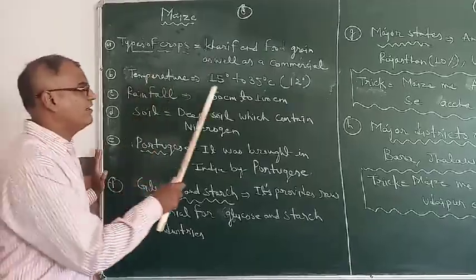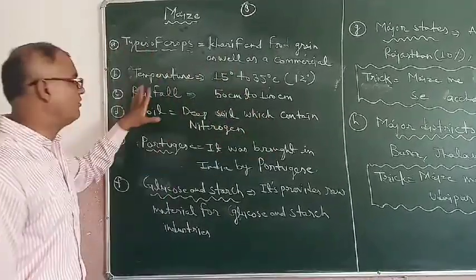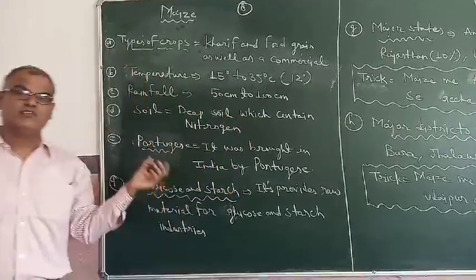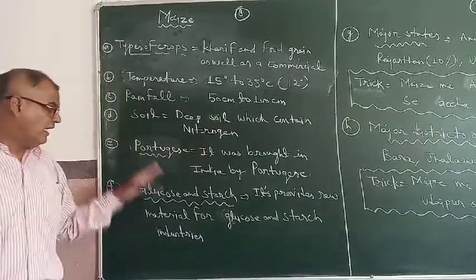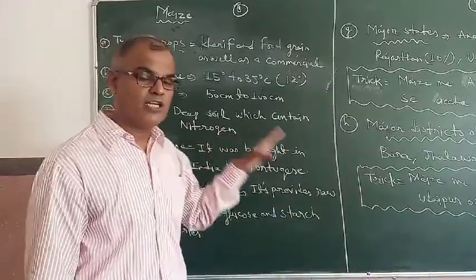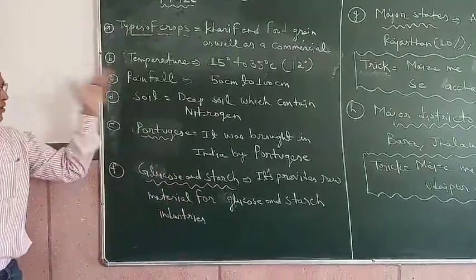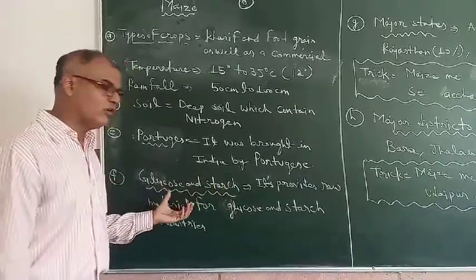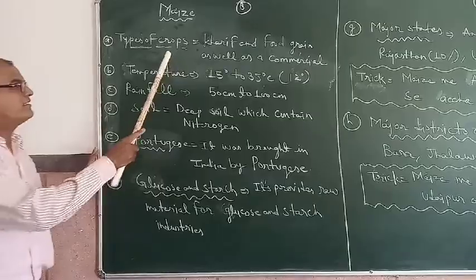Maize requires a temperature of 15 to 35 degrees Celsius and a rainfall of 15 cm to 100 cm. It requires deep soil containing more nitrogen and potash. It is a crop which was brought to India by the Portuguese in the 17th century. These crops also provide raw material to two industries: the glucose industry and the starch industry.